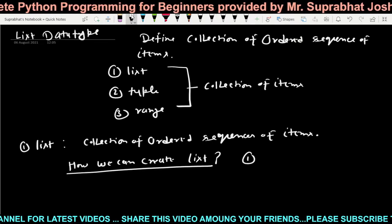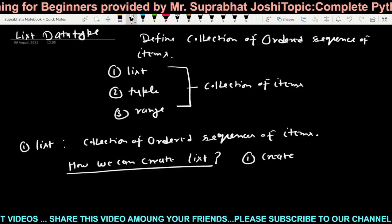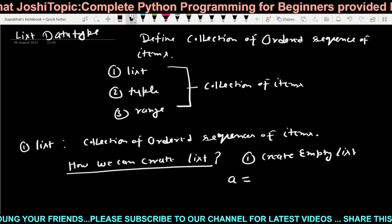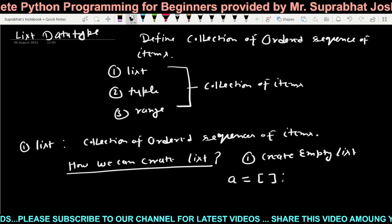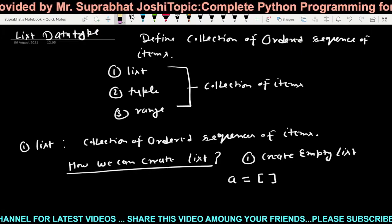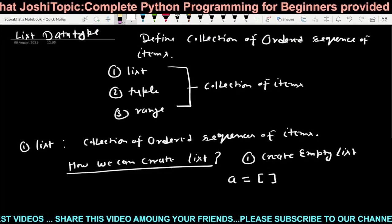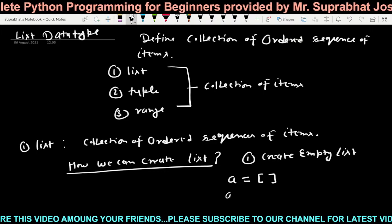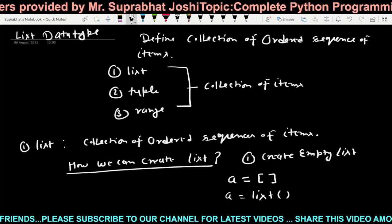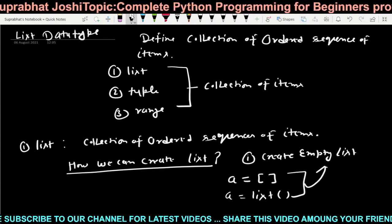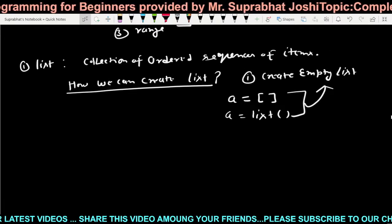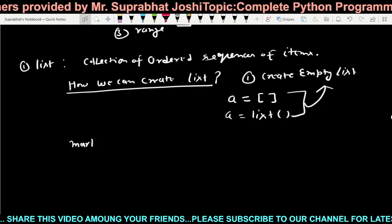How can we create a list? The first question is: how to create an empty list. Simply write a variable name with square brackets — no colon — and it will create an empty list. Also, we can use `a = list()` — the list function also creates an empty list. By both ways we can create an empty list.